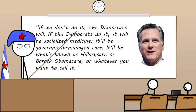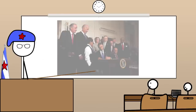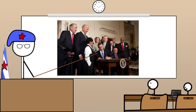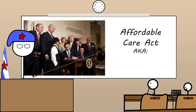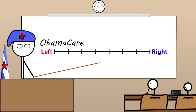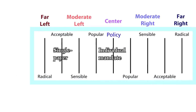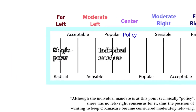As Mitt Romney put it: "If we don't do it, the Democrats will. If the Democrats do it, it will be socialized medicine — government-managed care." On March 23rd, 2010, President Barack Obama signed into law the Affordable Care Act, nicknamed Obamacare, which mandated individual health insurance. Now, Obamacare was a Democrat policy and therefore perceived as left-wing. So the Republicans took a step to the right and stopped advocating for the individual mandate, saying it was government overreach. And thus the Overton Window shifted to the right, leaving a single-payer system outside the acceptable norm.